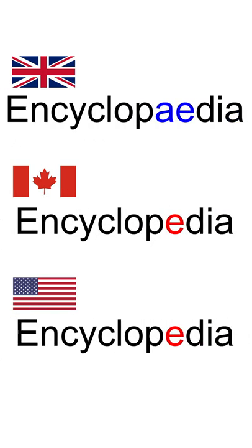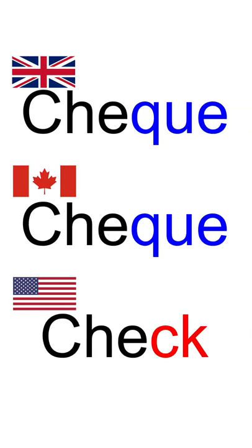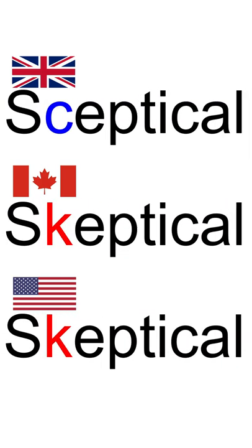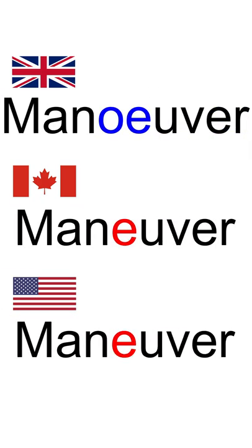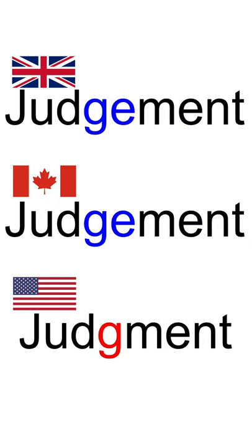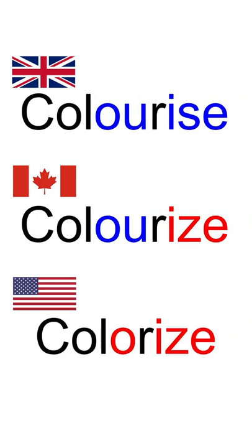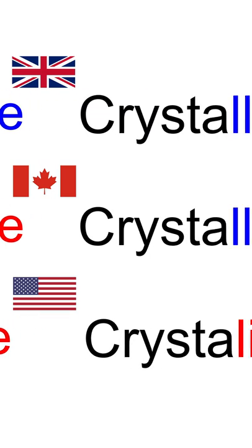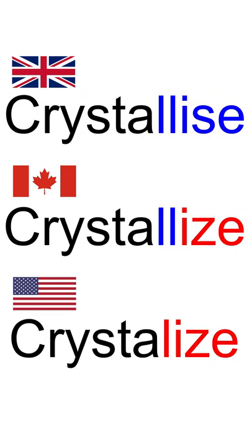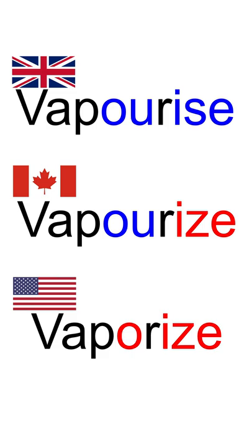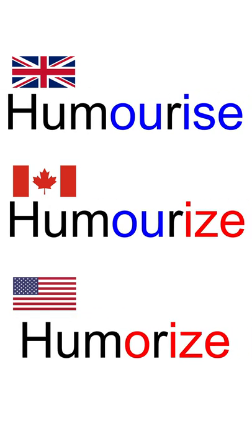And I know you may be thinking: are there any words that are spelled differently in all three dialects? And the answer is yes. If you look for words that use multiple dialect rules, you'll find a few. The first one I discovered was the word colorize. In Canadian English, this word uses the OU pattern from UK English and the IZE pattern from US English. Other words that use both of these patterns are vaporize and humorize. There are probably more too.